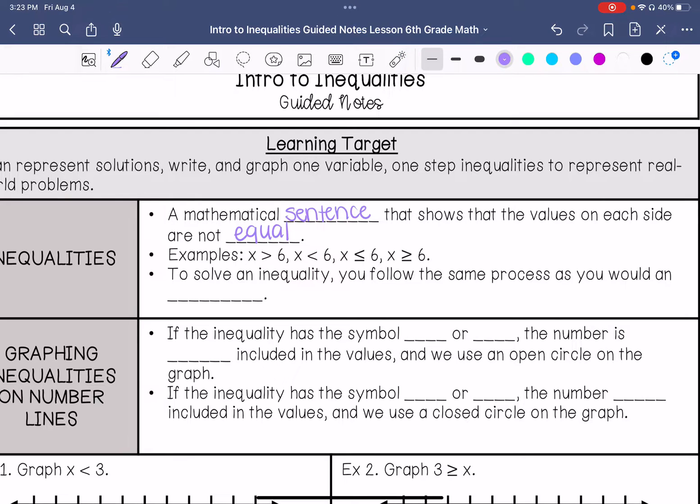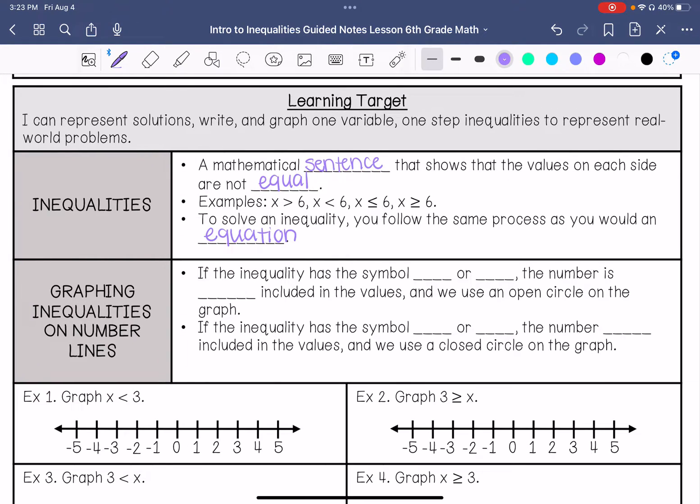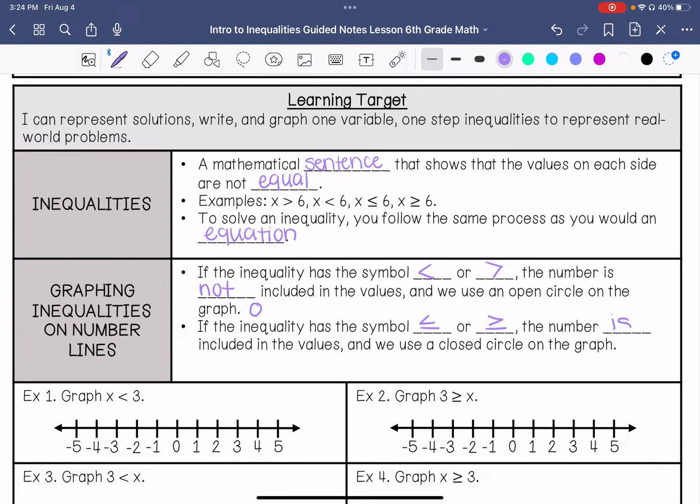To solve an inequality, you follow the same process as you would an equation. When you graph inequalities, if the inequality has the symbol less than or greater than, the number is not included in the values and we use an open circle on the graph. If the inequality has the symbol less than or equal to or greater than or equal to, then the number is included in the values, and we use a closed circle on the graph.